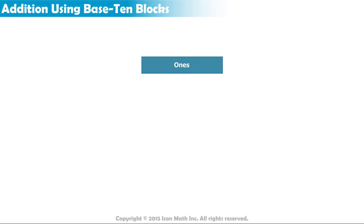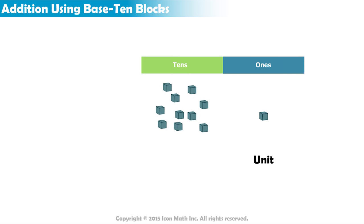In the ones place, we use 1 up to 9 individual units. In the tens place, we use a block of 10 units joined together, and we call them rods.